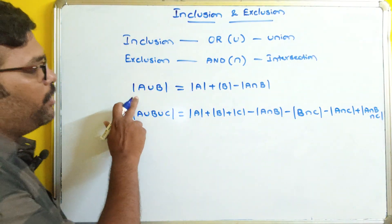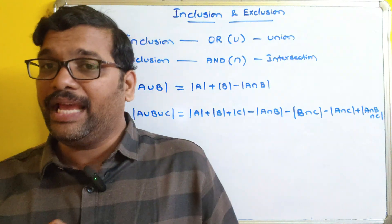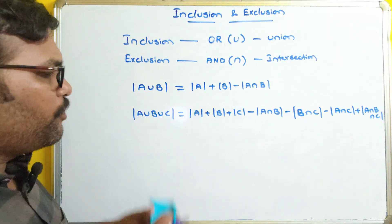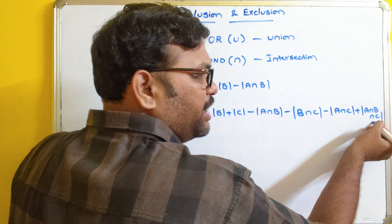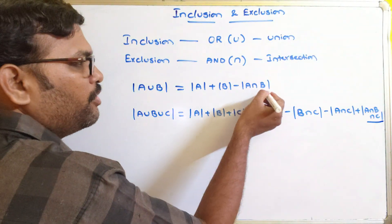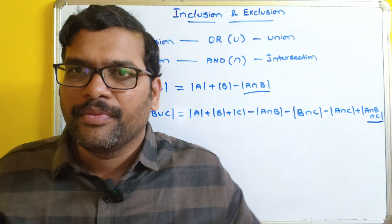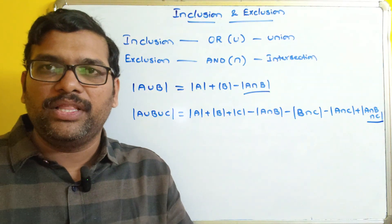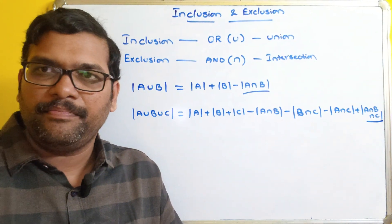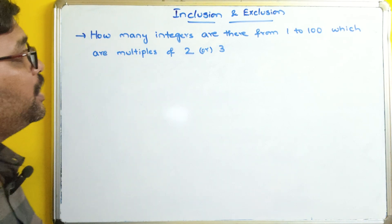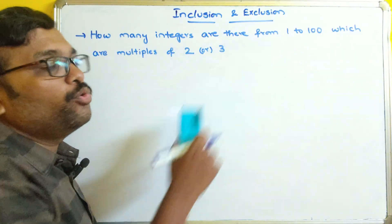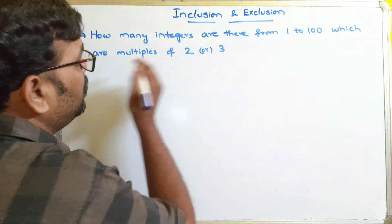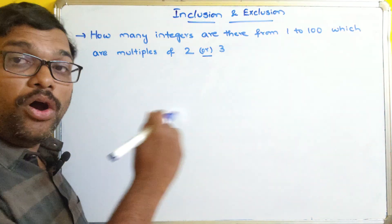Remember, we are only calculating the cardinalities — we are not dealing with the actual elements of the set, only the number of elements. From these formulas, you can find A intersection B intersection C, or A intersection B — anything you can find out. Now without delay, let us go with a simple example. We need to find the number of integers from 1 to 100 which are multiples of 2 or 3. Here, 'or' means inclusion, which is union.